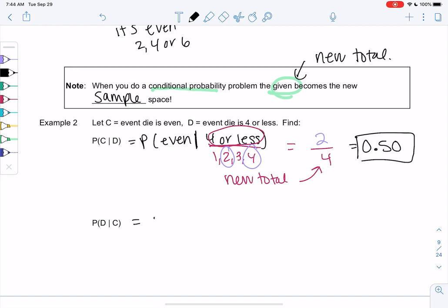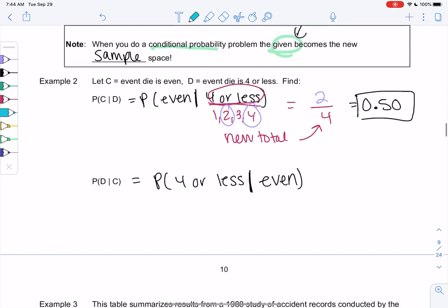All right, let's do the reverse, which is not necessarily the same thing. So 4 or less given even. The second one is always my given. So now given even means 2, 4, or 6. So my total is 3 because there's 3 numbers in the given.